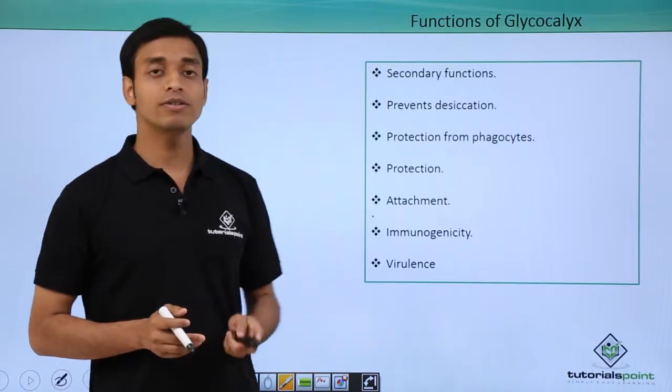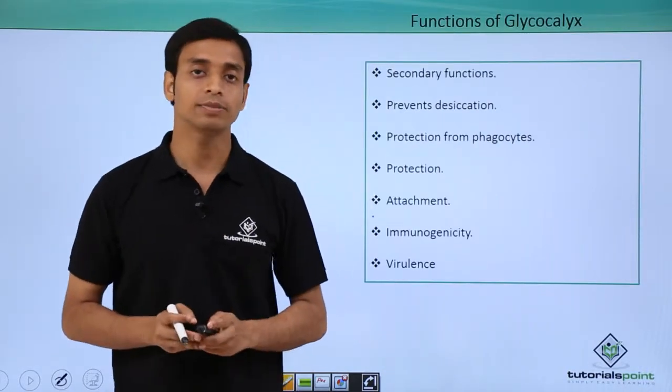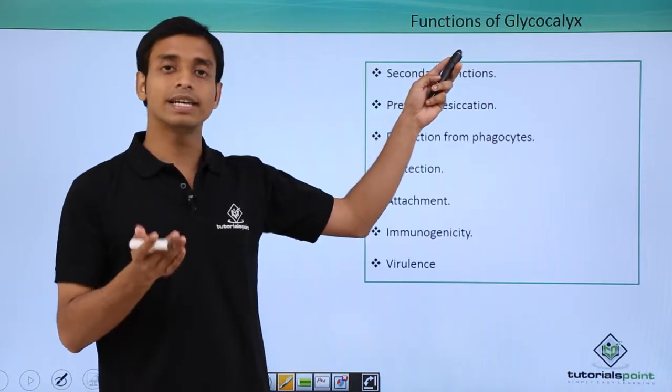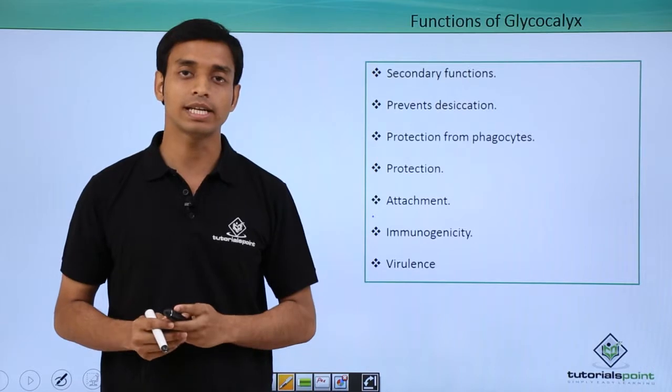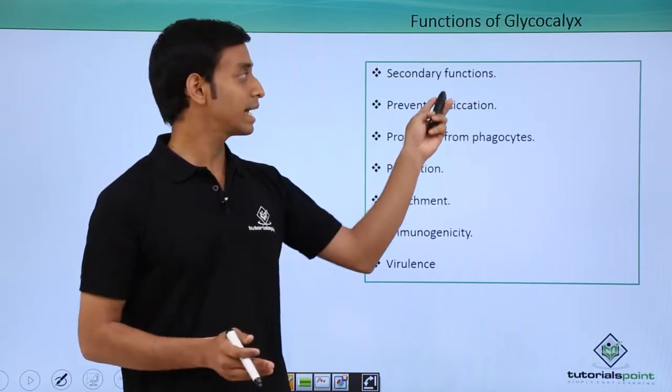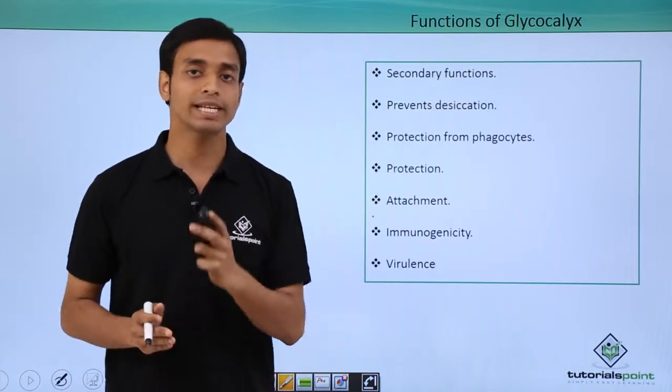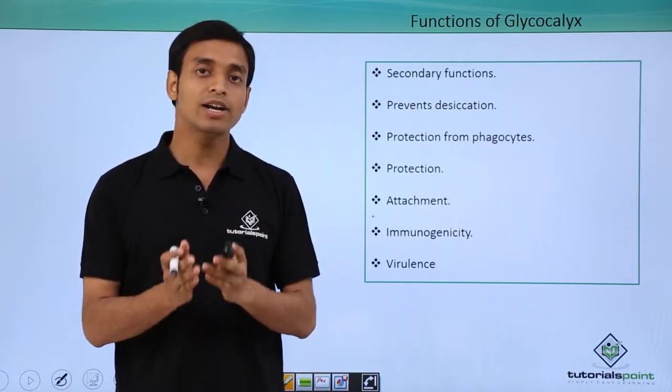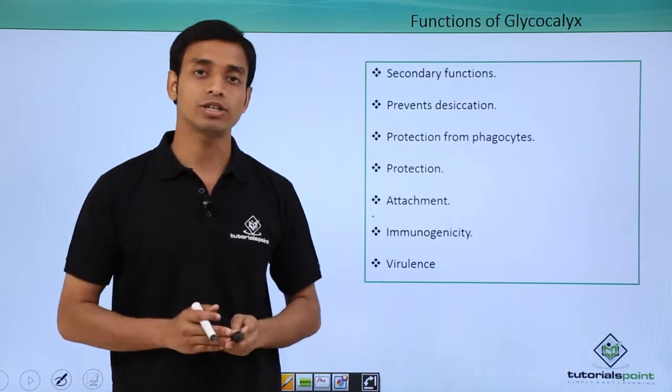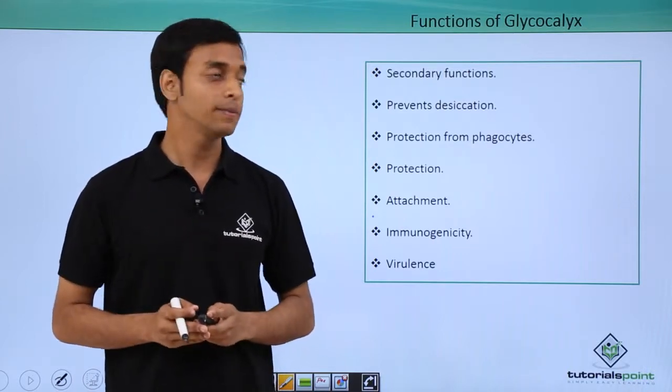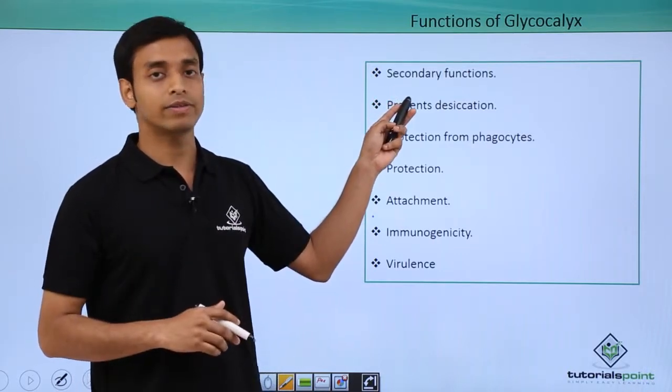Now let us talk about some of the important functions of glycocalyx. Glycocalyx is a layer which is not very essential for the survival of the cells, but they provide secondary functions. Secondary functions means they are not essential for survival, but they give additional advantages to the cells.